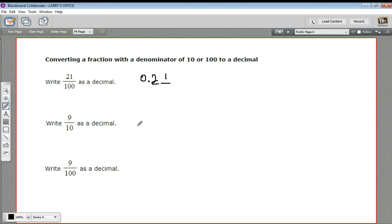If we have a denominator of 10, that means we only have one place to the right of the decimal point. And of course, the nine is going to fit in there. So this is nine tenths or 9 over 10.